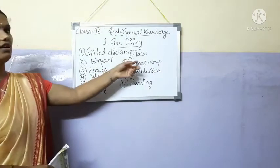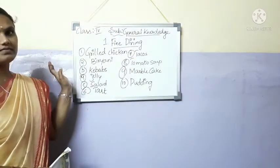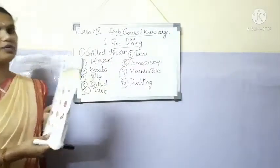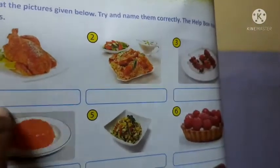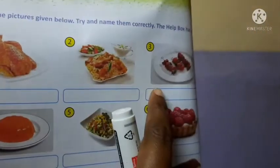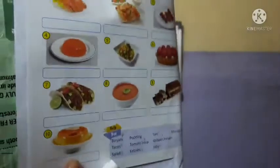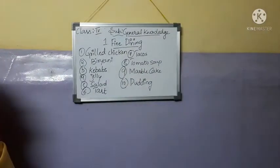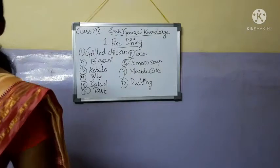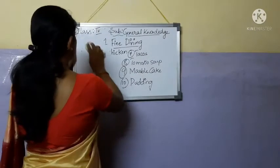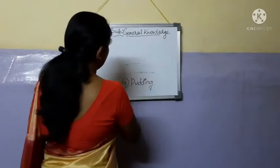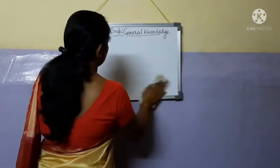Hope you all have understood this. I want you to write down the answers below the images where the space is given. Write down the answers in the spaces provided. This was our first topic, Fine Dining.